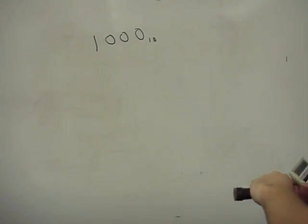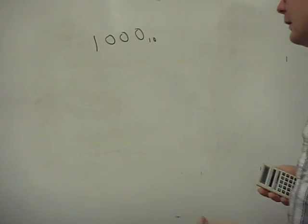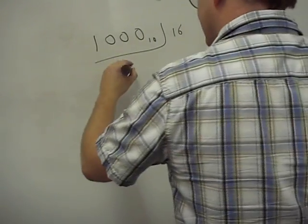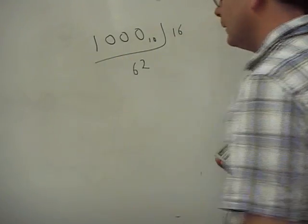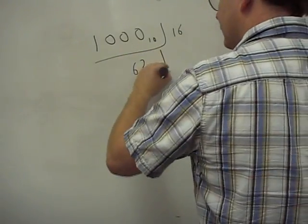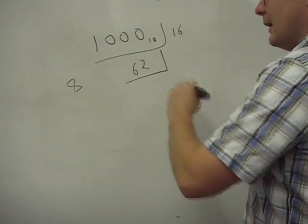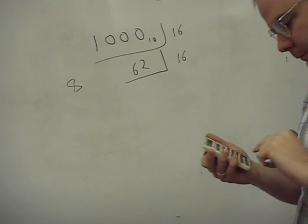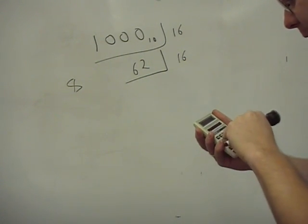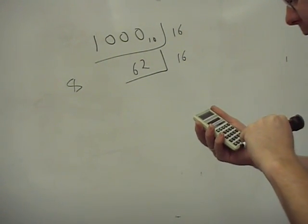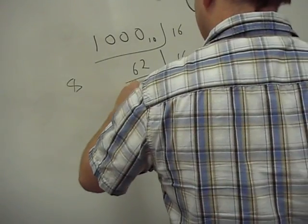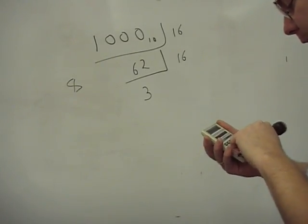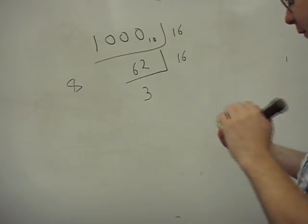16 goes into 1,000 62 times, with a remainder of 8. Then we divide 62 by 16. 62 divided by 16 goes 3 times, with a remainder of 14.